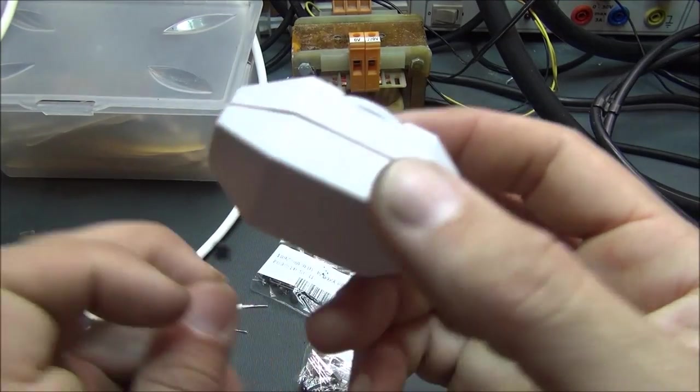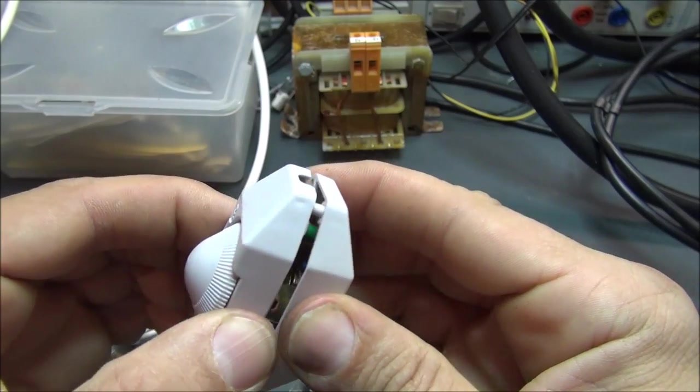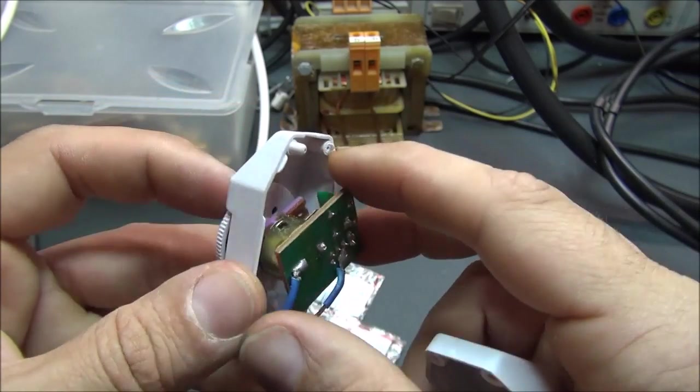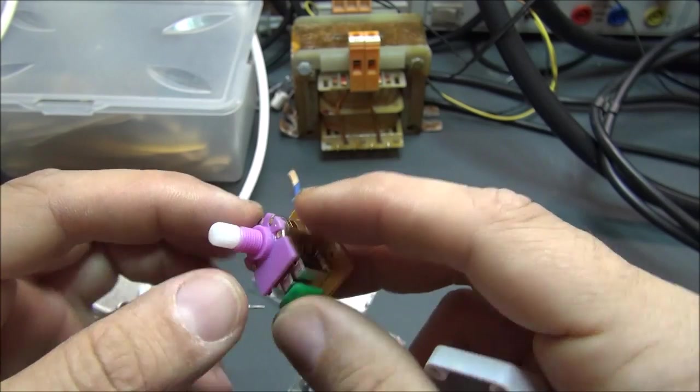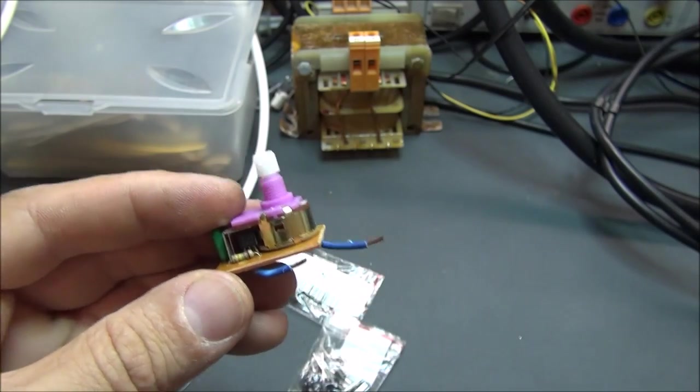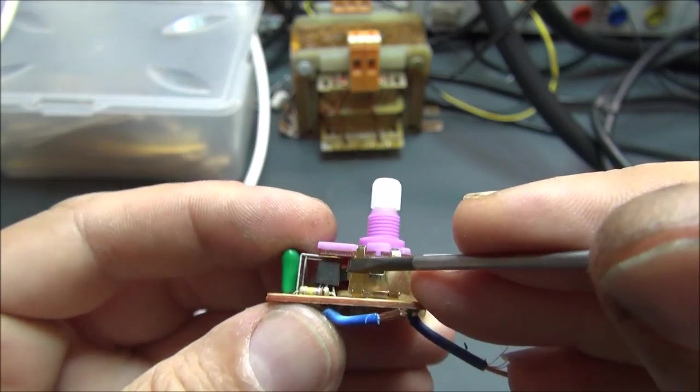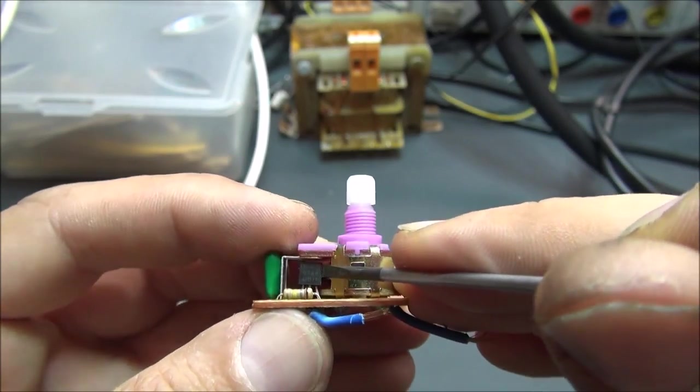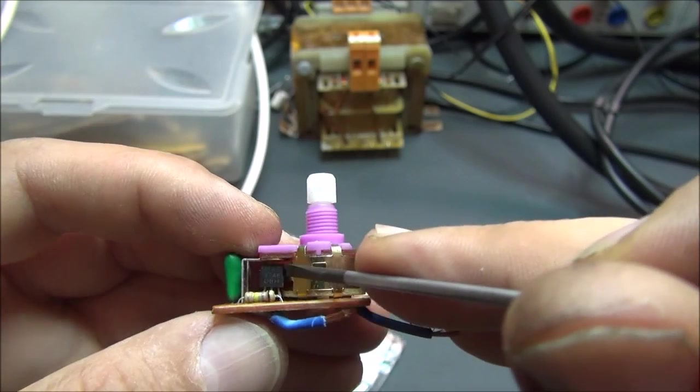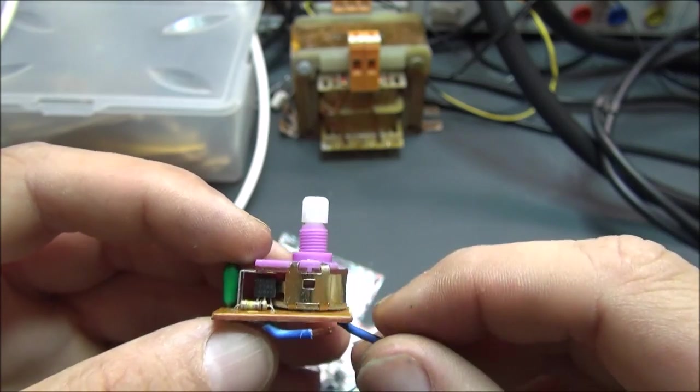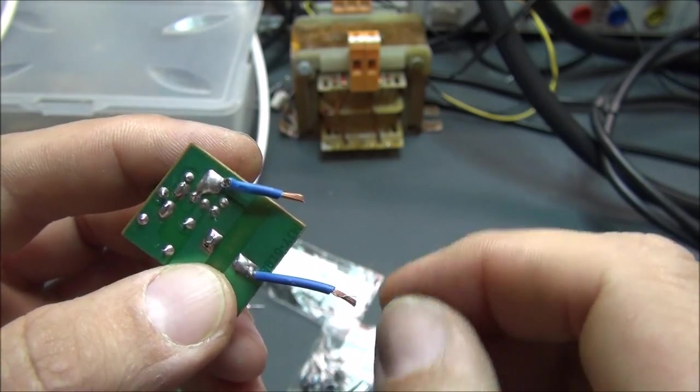This little dimmer coming from one of my friends. As you can see, this dimmer has a very little TRIAC inside. You can see here, this is very little. It looks like a bipolar transistor, but in fact it is a TRIAC.